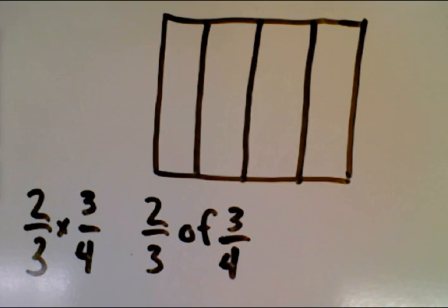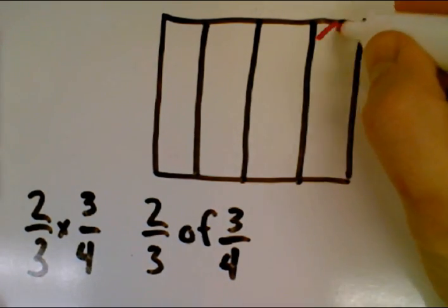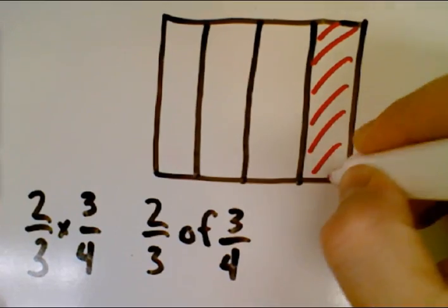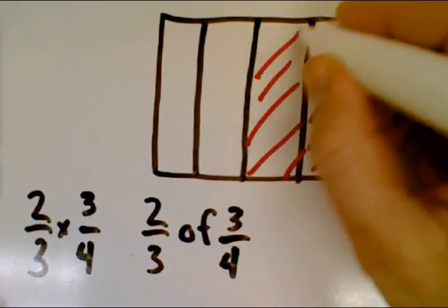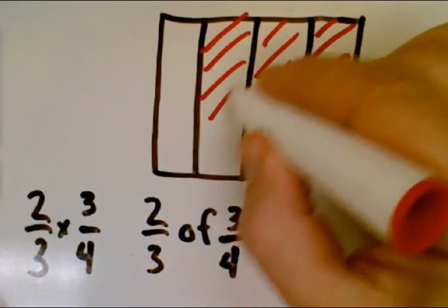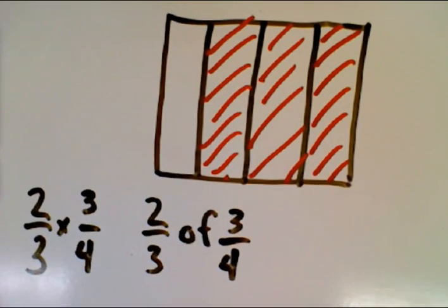To represent three-quarters of the whole, we shade in three of those four pieces. So that's pretty straightforward. We've shaded in three-fourths of the whole.